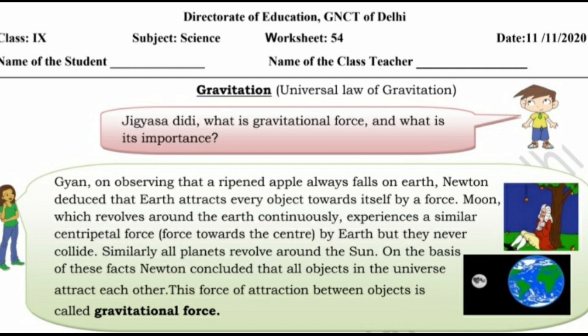On observing that a ripened apple always falls on earth, Newton deduced that earth attracts every object towards itself by a force. The moon, which revolves around the earth, continuously experiences a similar centripetal force towards the centre by earth, but they never collide. Similarly, all planets revolve around the sun. On the basis of these facts, Newton concluded that all objects in the universe attract each other. This force of attraction between objects is called gravitational force.